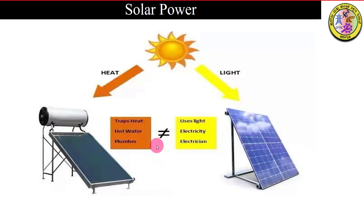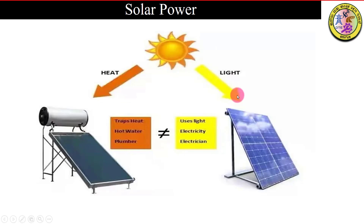Solar power — we use solar power either by heat. We use solar water heaters for hot water or pumping purposes. It traps the heat. We also use light — that light energy is converted to electrical energy, captured by solar cells.